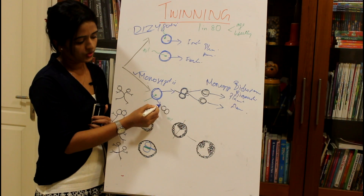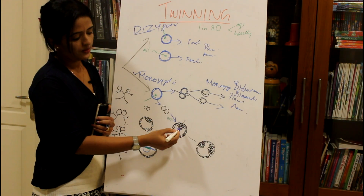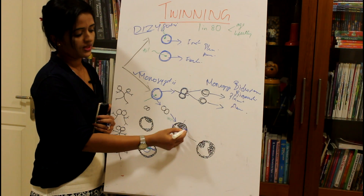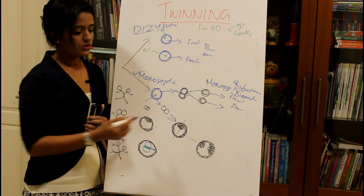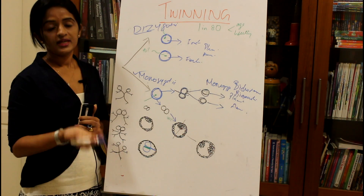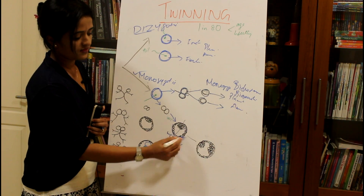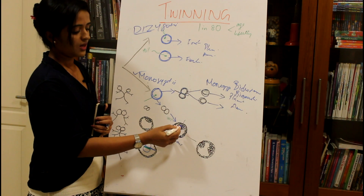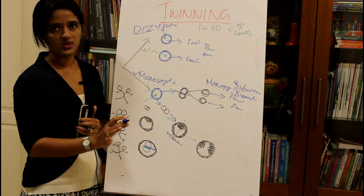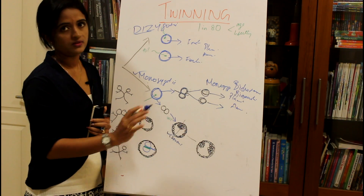Now consider another scenario where cleavage continues through two-cell, four-cell, and sixteen-cell stages, reaching a stage where cells form an outer cell mass and an inner cell mass. When the outer cell mass forms, the blastocystic cavity is formed, giving rise to the chorionic cavity. Division then happens only for the inner cell mass, so the chorionic cavity is common for the twins, and the amniotic cavity is not yet formed.